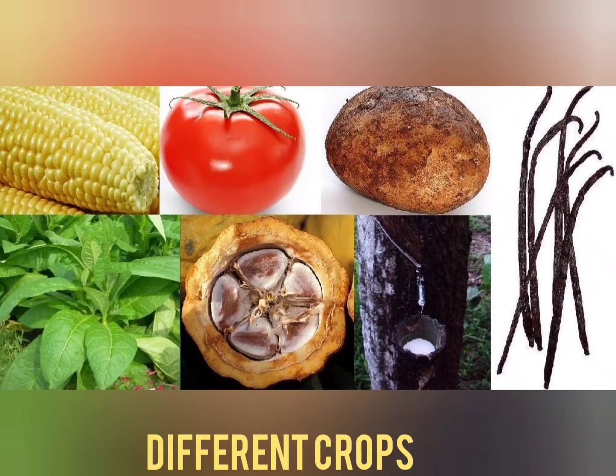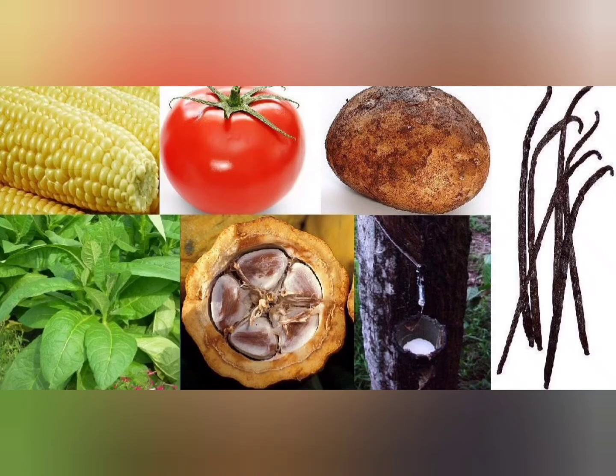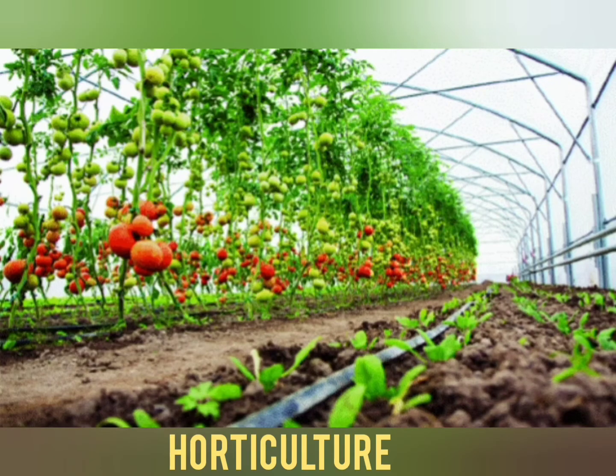In India, there are two main types of crop varieties depending on the seasons: Kharif crop and Rabi crop.